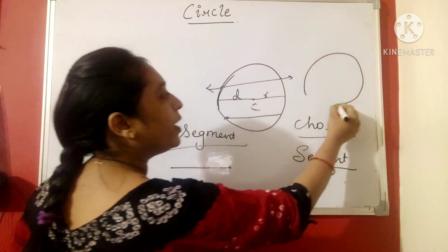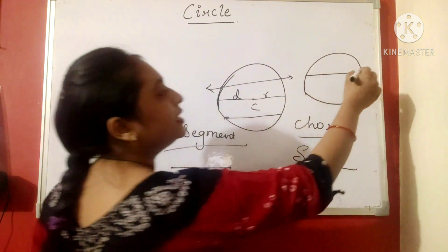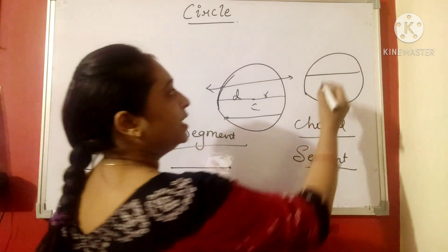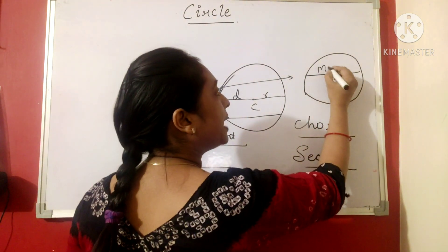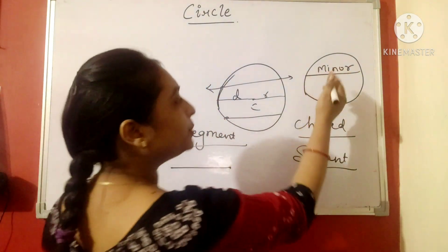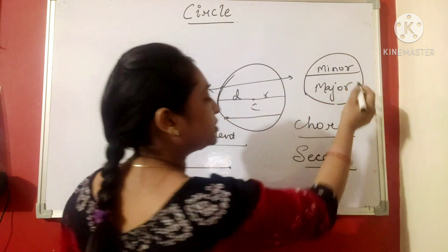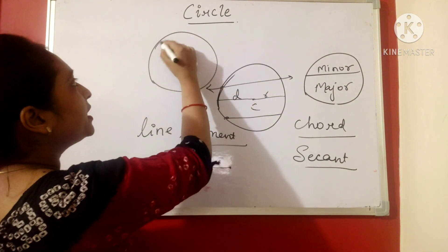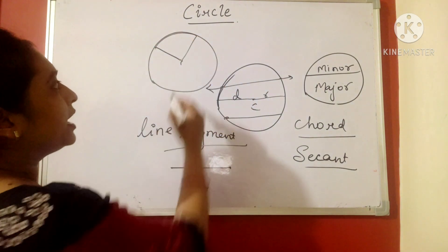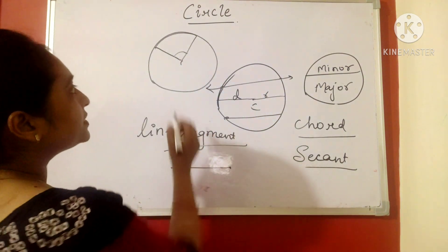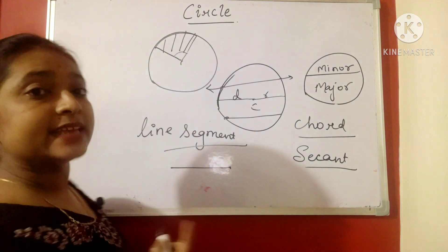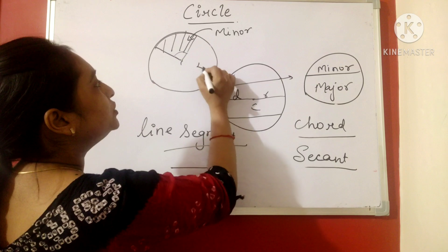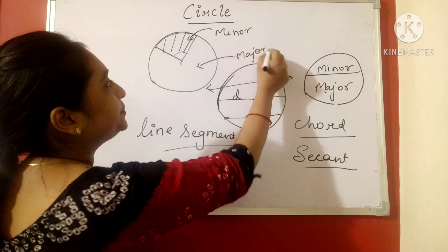Now next thing is, whenever a chord is dividing the circle into two half, then it is called as segment. The lesser part will be the major segment. On the another hand, if a circle is divided by an arc and it is enclosed within the radius, then this region is called as sector. The smaller is called as minor sector and the larger is called as major sector.